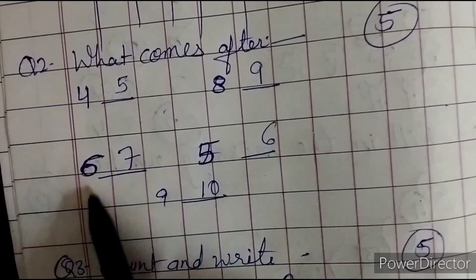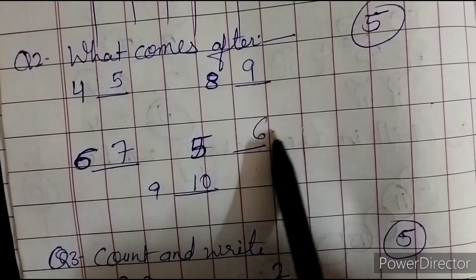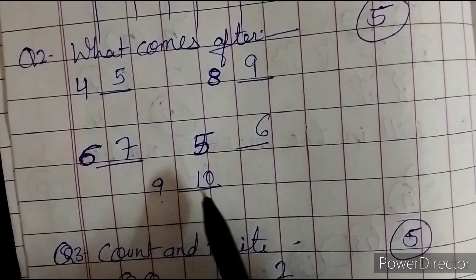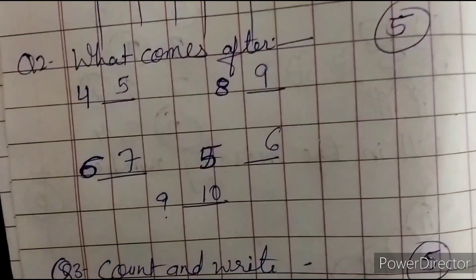Then what comes after? Then what will come after? 10. So after numbers, we always say the numbers coming next. Okay? You will be careful.